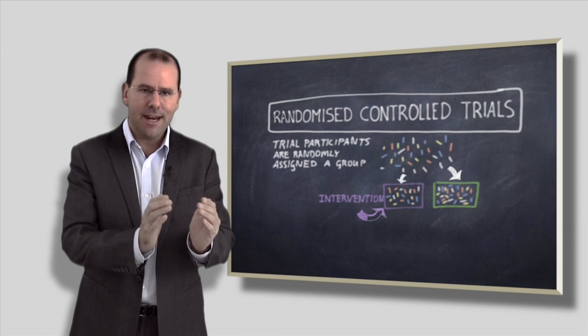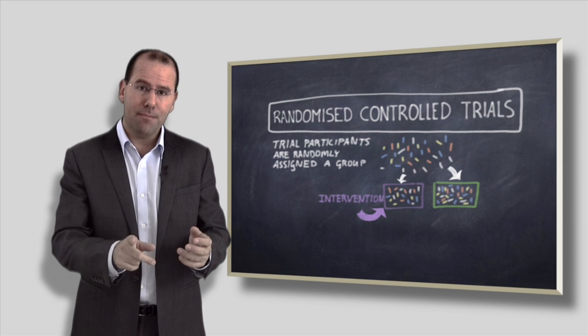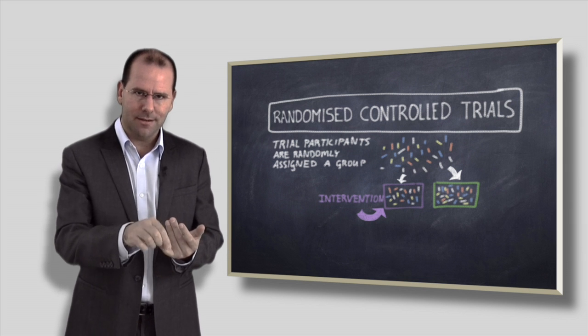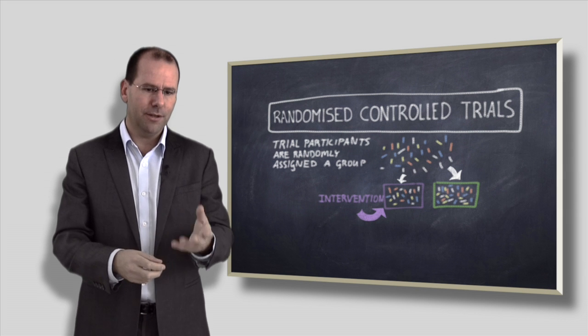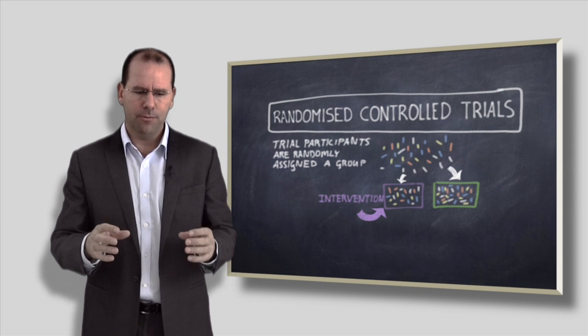The one group gets an intervention. That intervention might be a drug—there's a number of things it can be. Keep in mind that randomized control trials don't have to have people, individuals, as the subject of interest. They could be communities, it could be a hospital, but for the purpose of this talk let's imagine that these are people we're talking about.